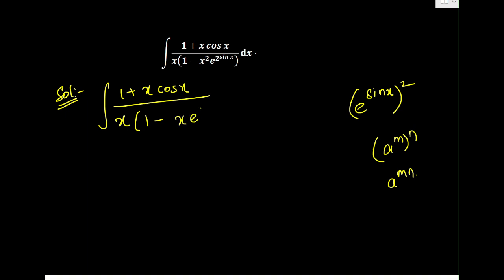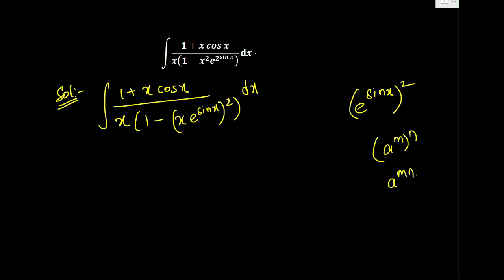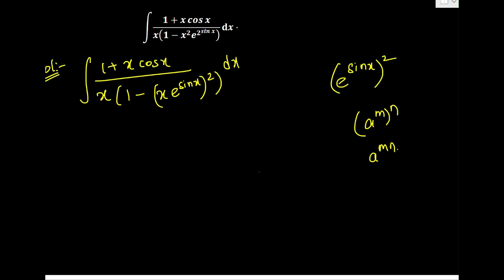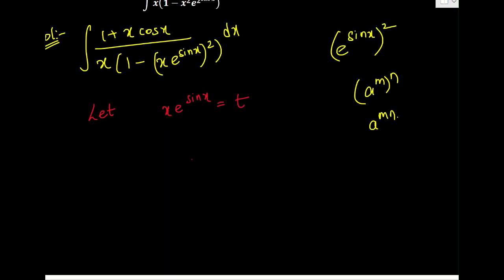I will rewrite the denominator as x·e^(sin x) squared, into dx. After looking into this, I found a simple logic: let us substitute t = x·e^(sin x). If I make this as t in the substitution, let us differentiate this function with respect to x.